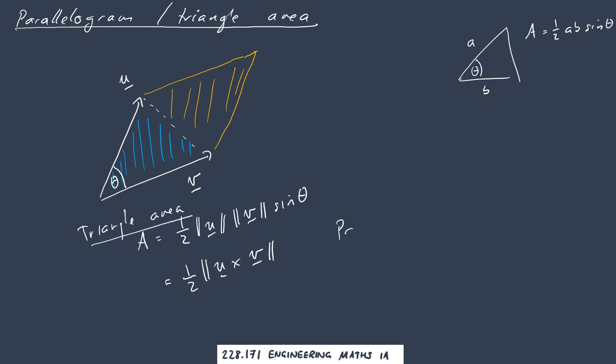The parallelogram area is just two of those triangles. A equals two times triangle area equals length of u, length of v, sine theta, which is the length of the cross product vector of u and v.